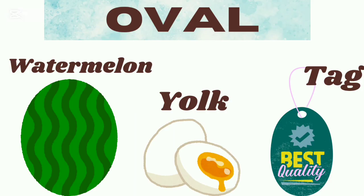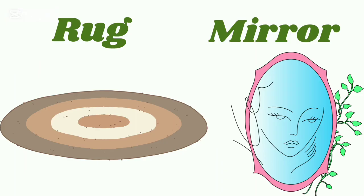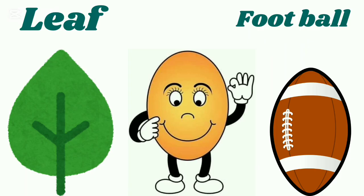Oval shape: watermelon, yolk, tag, rug, mirror, oval football.